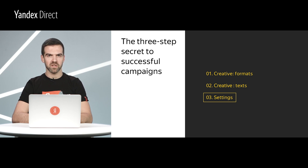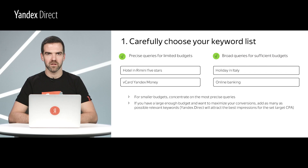The last thing you should pay attention to before launching your campaign for ad networks is the campaign settings. In ad networks, broad keywords are just as effective as narrow ones. The choice of which to use depends on your budget. The more limited your budget, the better an idea it is to use narrower, more relevant keywords.